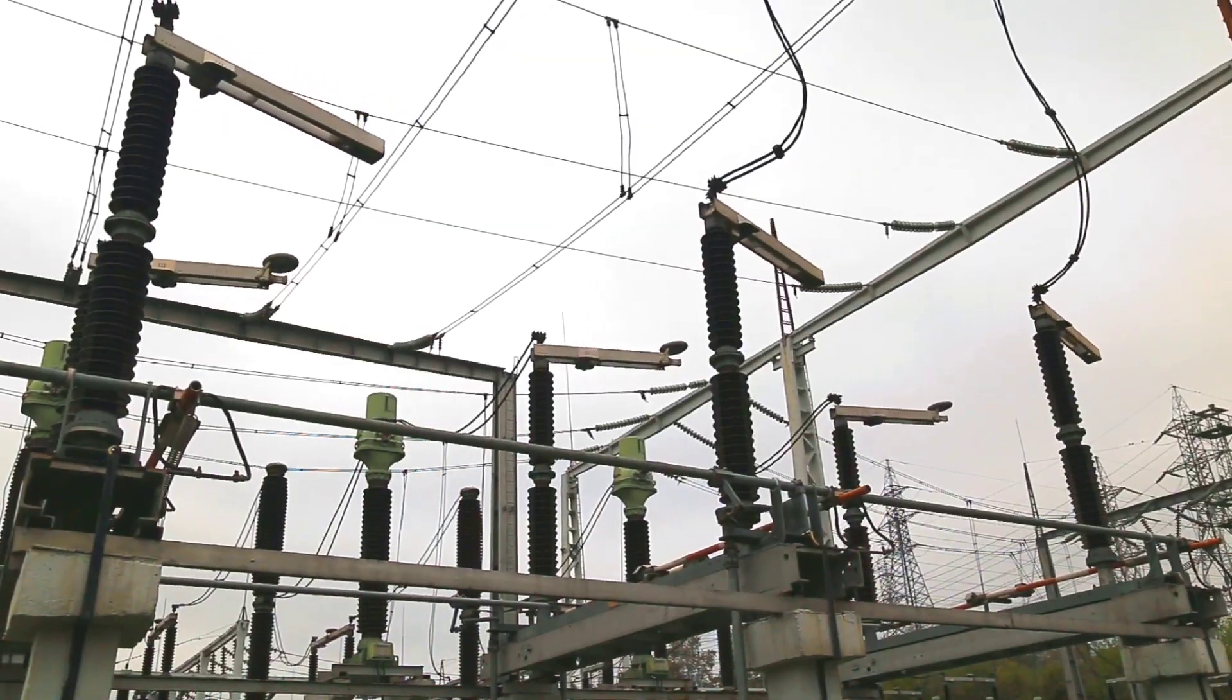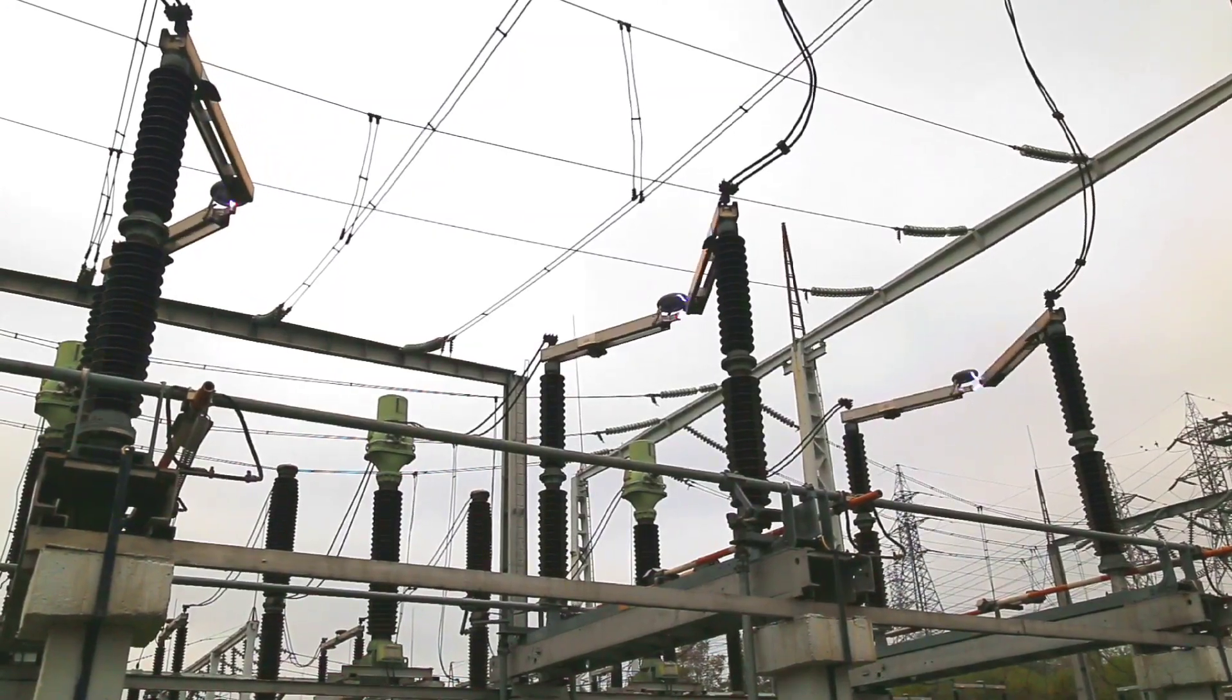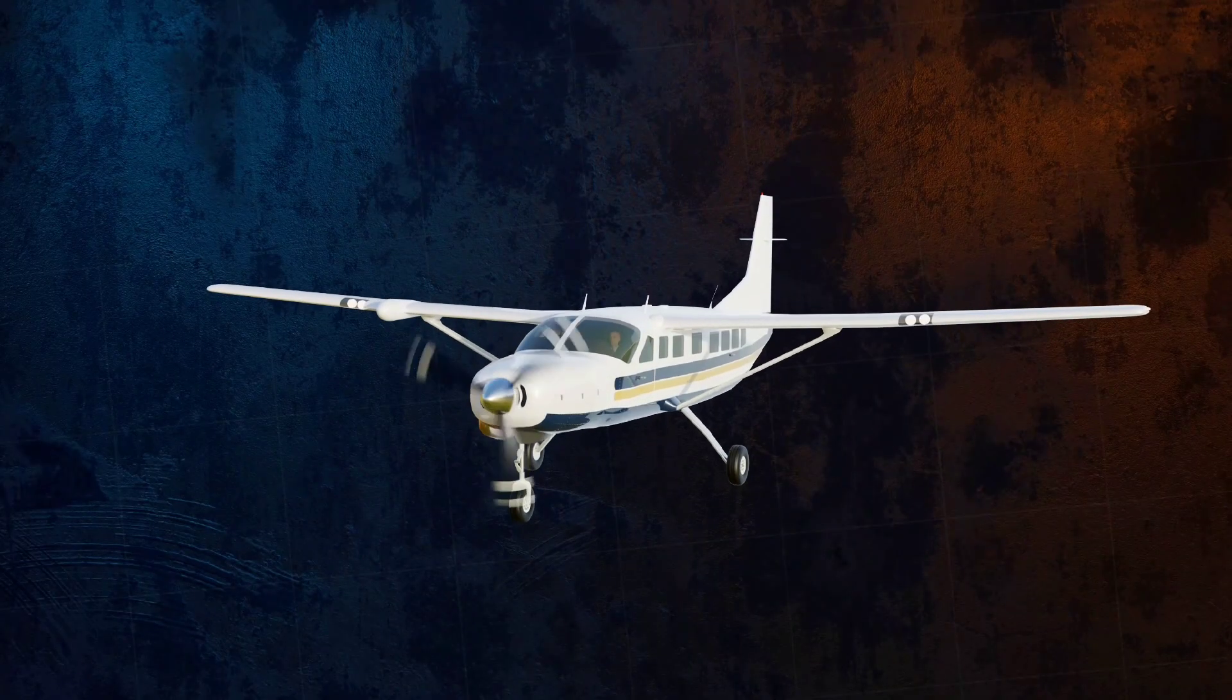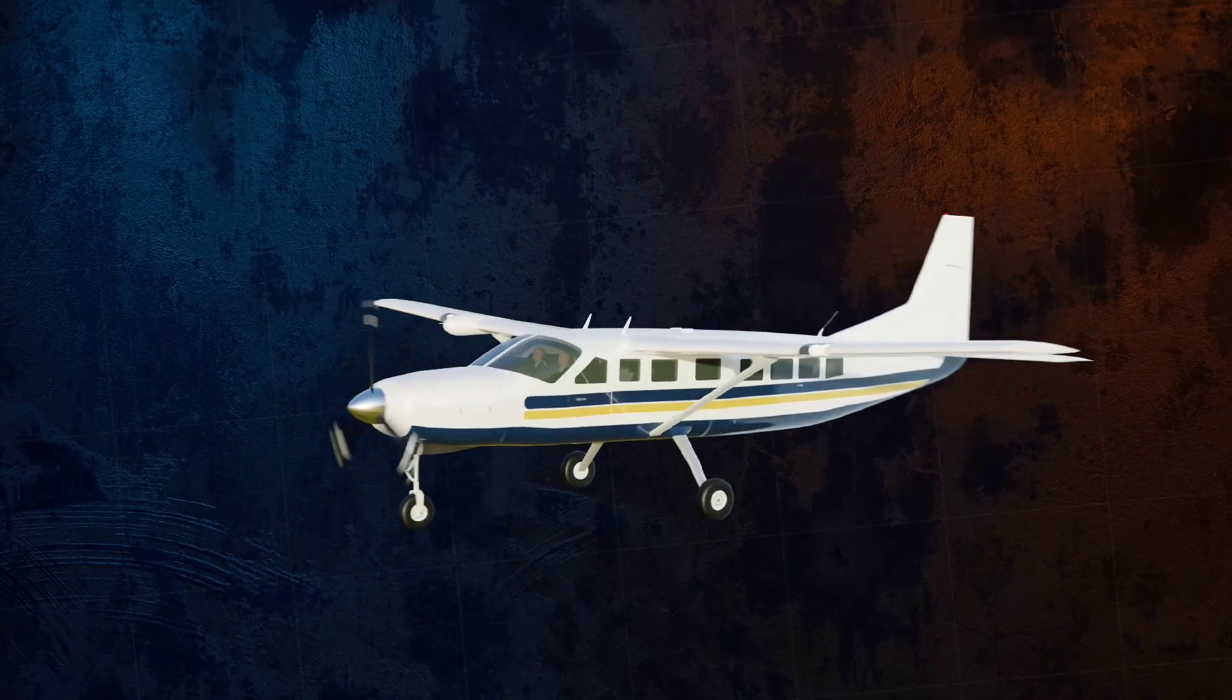A wind turbine turns wind energy into electricity using the aerodynamic force from the rotor blades, which work like an airplane wing or helicopter rotor blade.